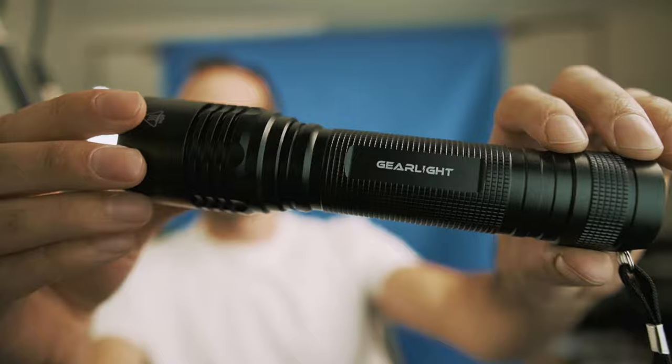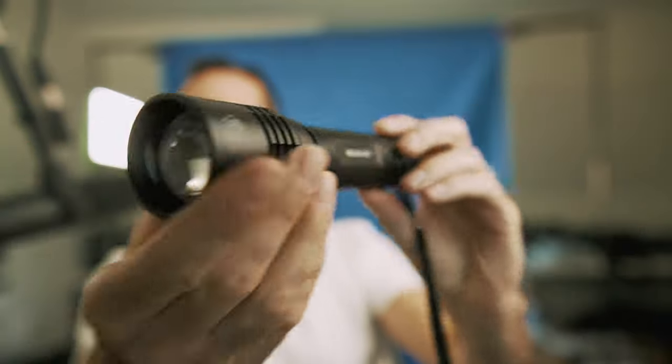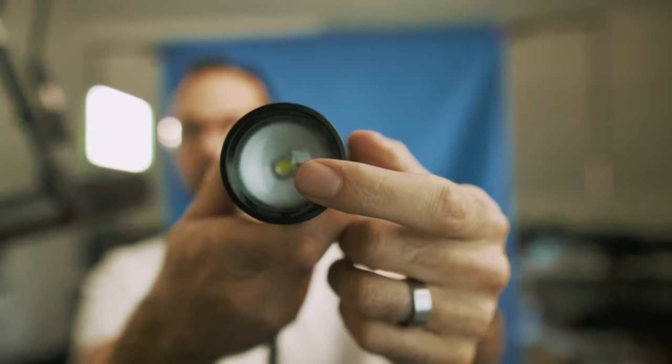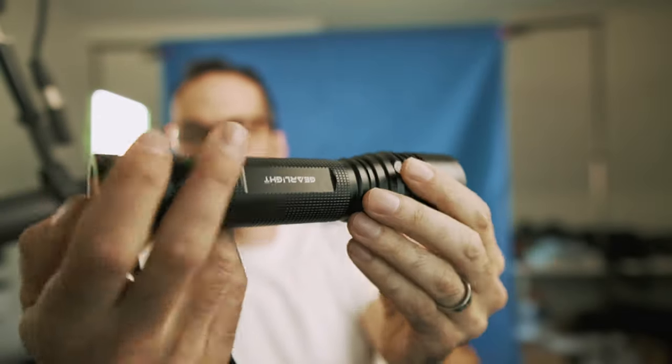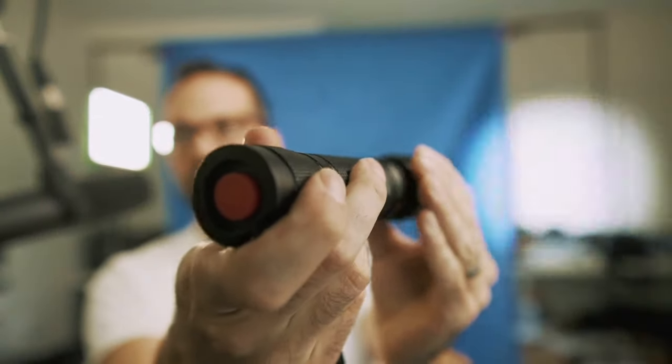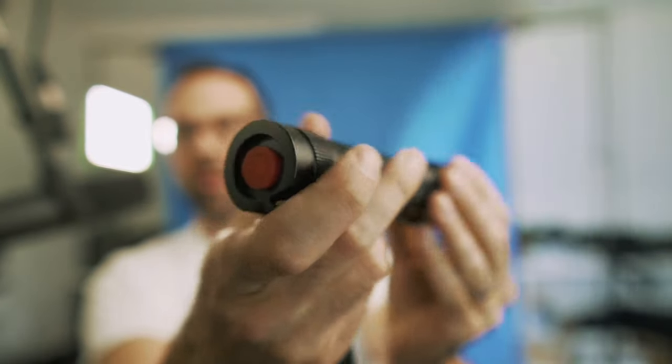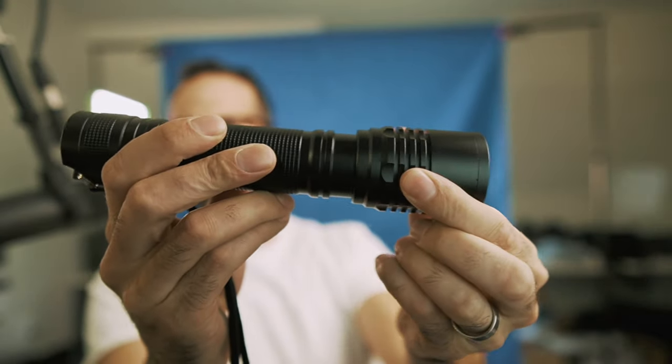This is an all-aluminum flashlight with an LED element in the front here. It's adjustable so you turn it on like this and you can adjust the beam by sliding this in and out.